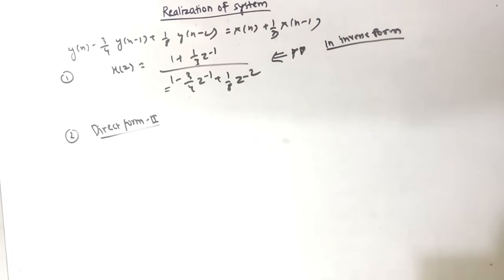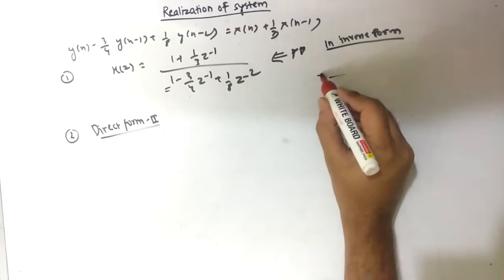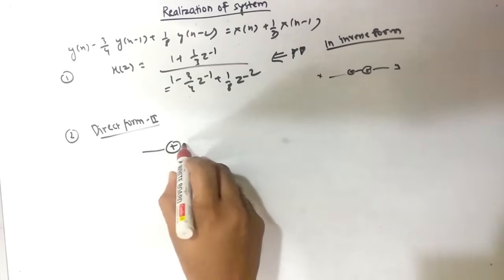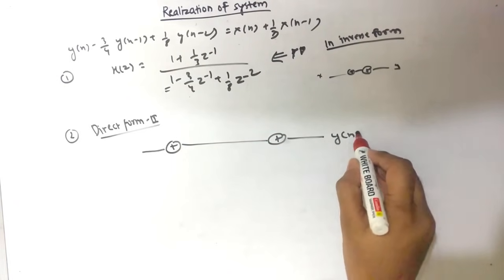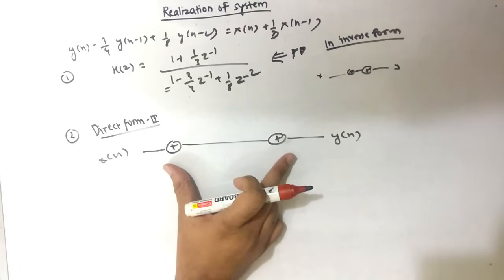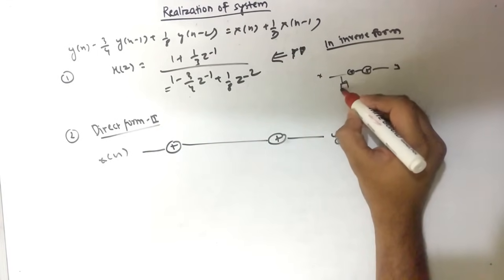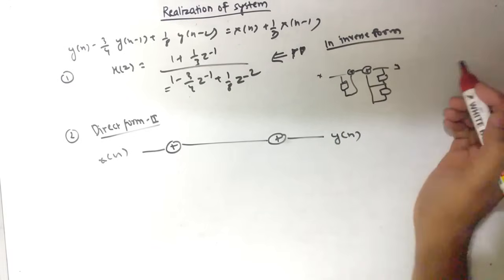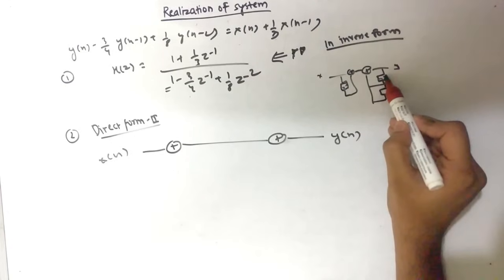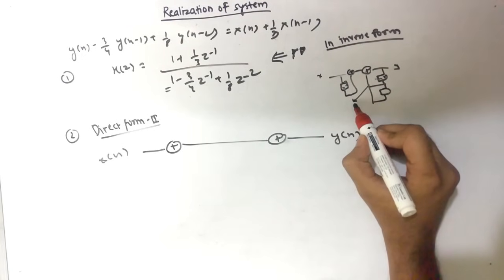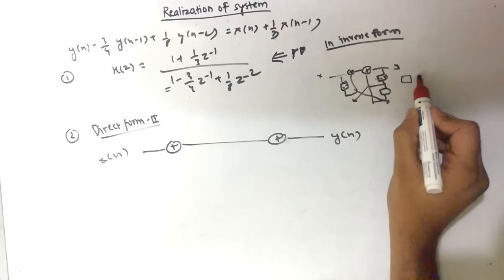Now for Direct Form 2: in Direct Form 1 we had x(n) on the left and y(n) on the right. In Direct Form 2 we do the opposite — the adders are now on the left/center and x(n) is on the right. The issue with Direct Form 1 is that the Z⁻¹ delays are used twice (once for zeros, once for poles). In Direct Form 2 we eliminate this by shifting the poles to the left side and zeros to the right, clubbing the common delay elements.